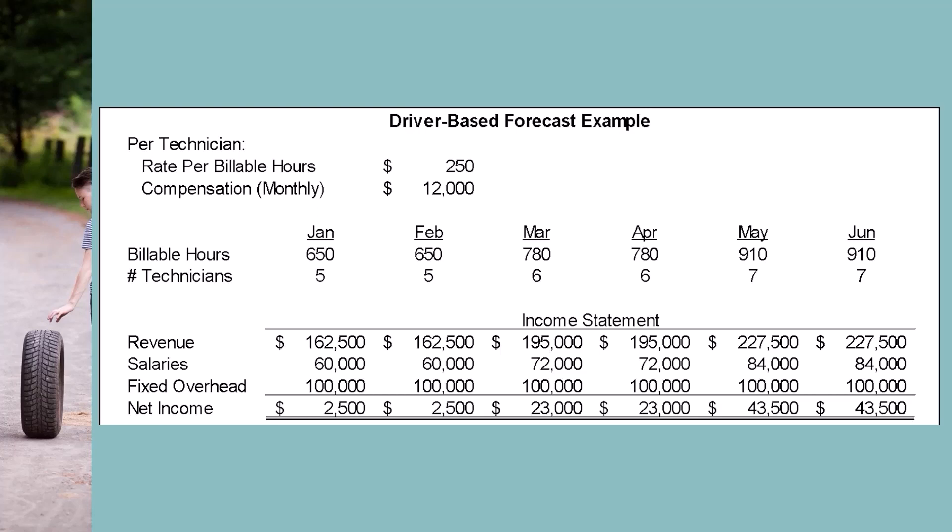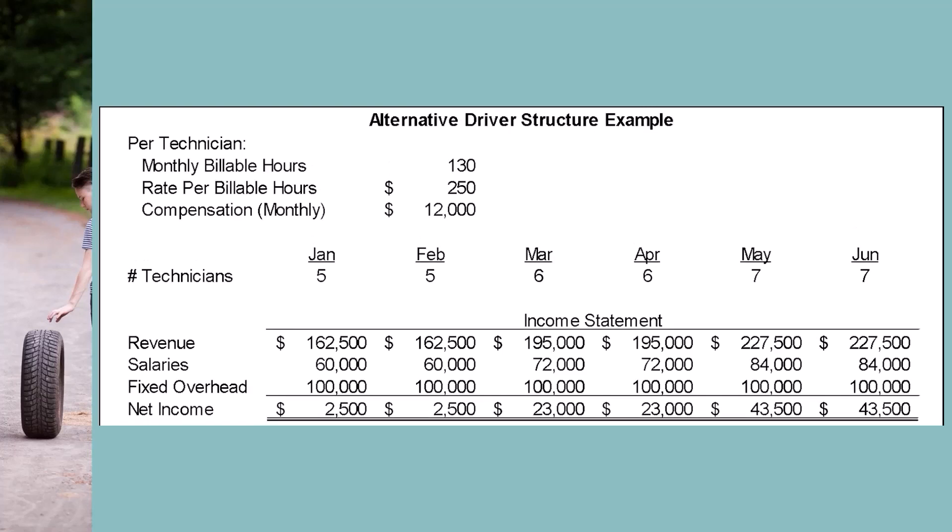The bottom part of the example shows a simple income statement calculated from the drivers. Revenues are calculated as the monthly billable hours multiplied by the per-technician rate per billable hour. Salaries are calculated as the number of technicians multiplied by the per-technician monthly compensation. Fixed overhead isn't calculated from a driver — it's assumed to be a flat $100,000 per month.